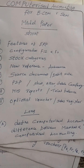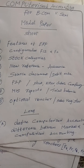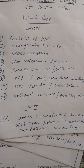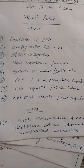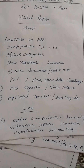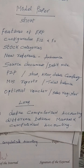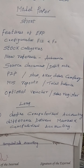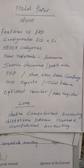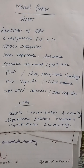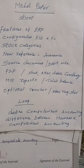Optional voucher — if optional voucher is not given, it will be given as sales register or purchase register. If the question on differences between computerized accounting and manual accounting is not given, definitely a question on ERP, its importance, and its components will be given.